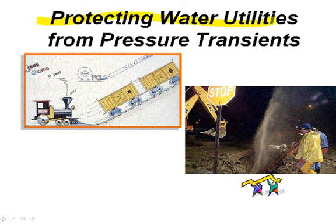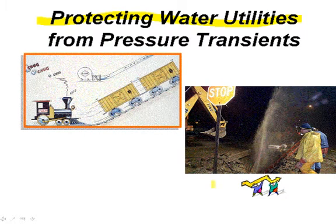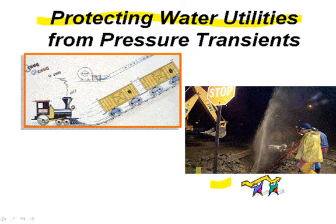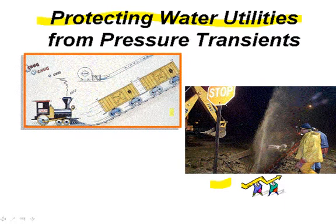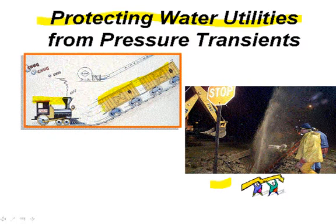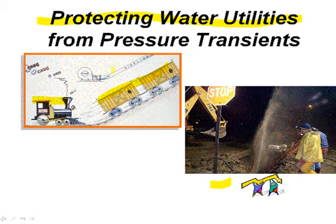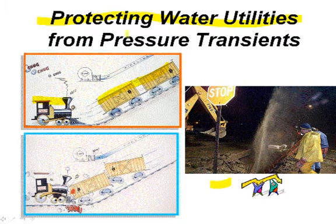I'm going to talk to you about protecting your water utility from pressure transients. Pressure transients are sure to occur in your water system. For example, if you have a pipe break, you'll get a downsurge and low pressure transients and perhaps high pressure transients to follow. A very common situation in a water utility is shown here in this cartoon, where the engine represents a pump and the train cars represent the water. If the pump fails, due to the inertia of the water, you'll get a very large downsurge of pressure, and that will immediately be followed by, due to gravity, the flow reversing and you get this upsurge as shown here.